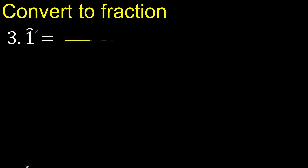First, all the number without point: 31 minus the number outside the symbol. The number outside the symbol is 3, without point.